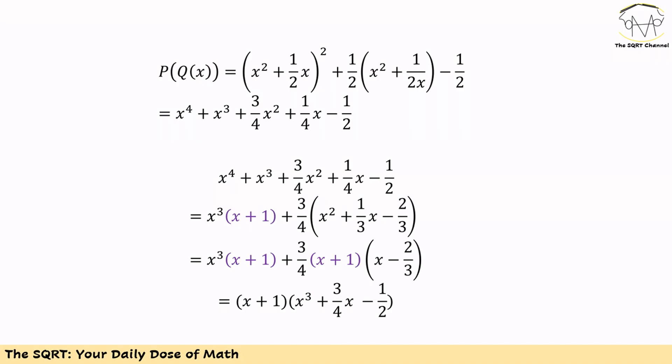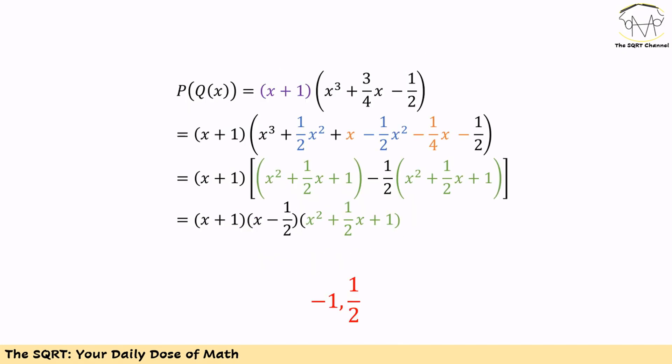At the end we have (x + 1)·(x³ + (3/4)x - 1/2). So x = -1 is one root of this polynomial. To find the other roots inside the cubic term, we add and subtract x²/2 and rewrite (3/4)x as x - x/4. This allows us to factor out (x - 1/2), writing it as (x - 1/2)·(x² + (1/2)x + 1).